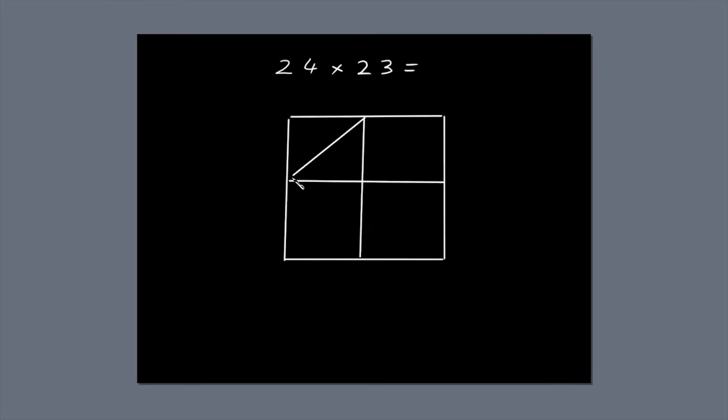Now, draw a diagonal through each of the smaller boxes. Write 24 along the top of the box, and 23 down the right-hand side of the box.